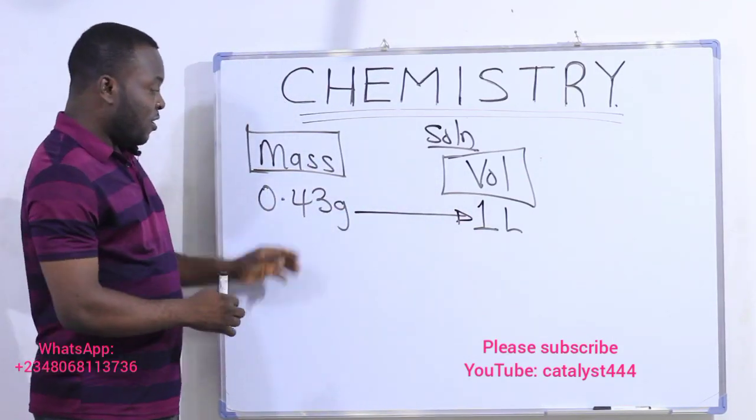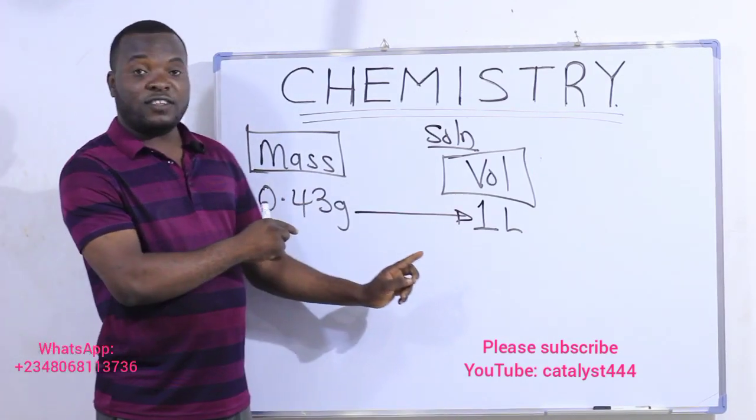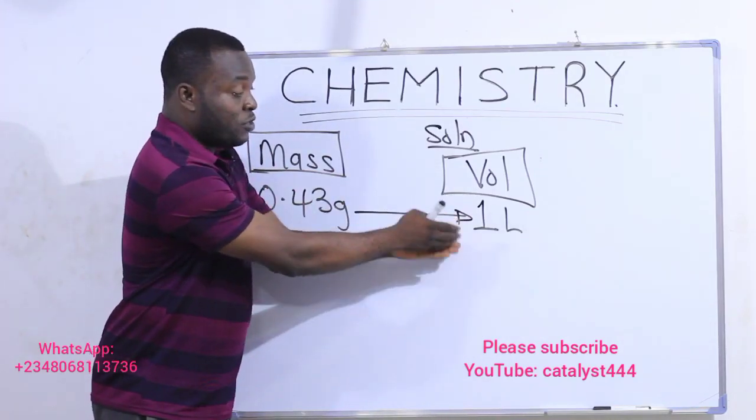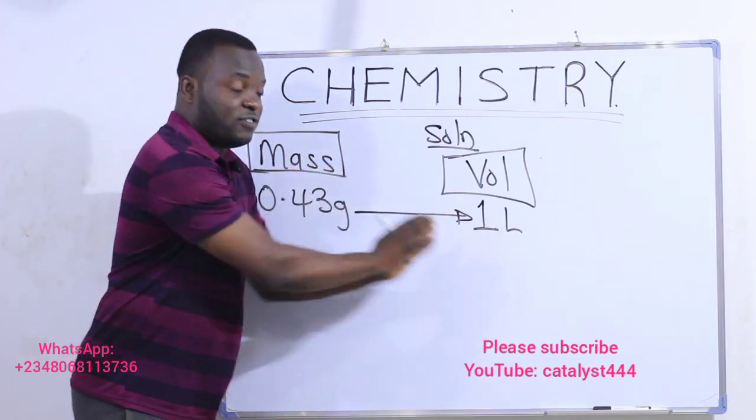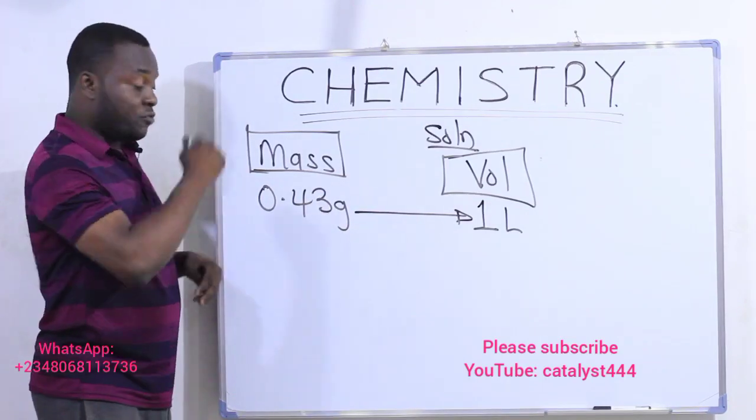Just as I said earlier, convert the mass to milligram, convert the volume to liter. As you can see, the volume is already in liter from the question given. So we are not going to touch this. It's already settled. We are only going to convert this mass. It is given in grams, so we will convert it to milligrams.